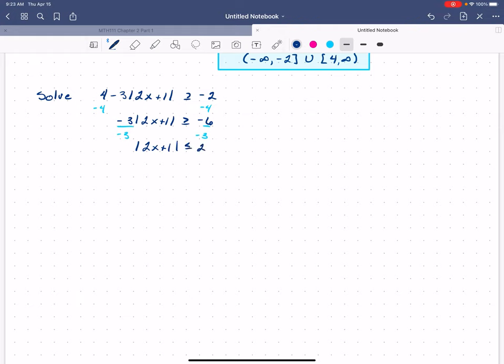All right, so now if we go back up and look at our table, this is equivalent to the statement that negative 2 is less than or equal to 2x plus 1, less than or equal to positive 2.